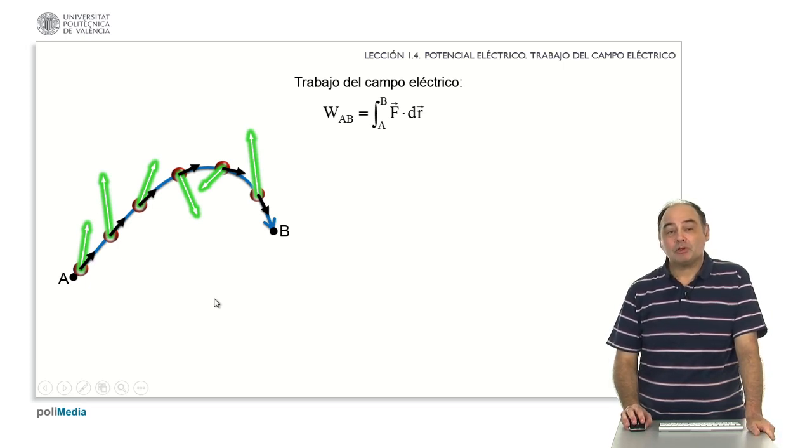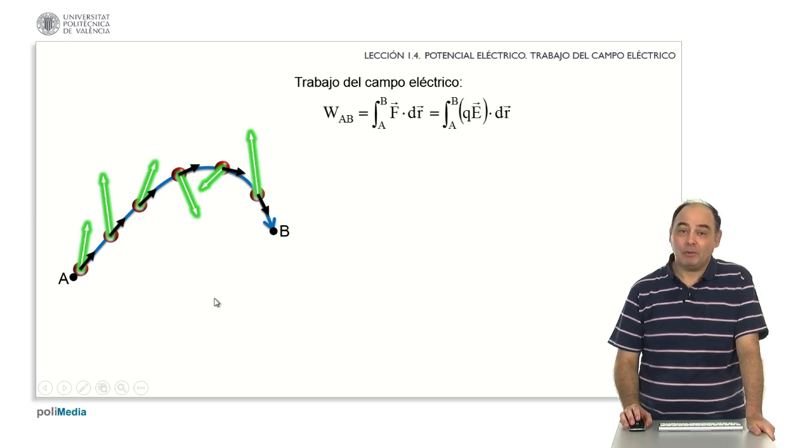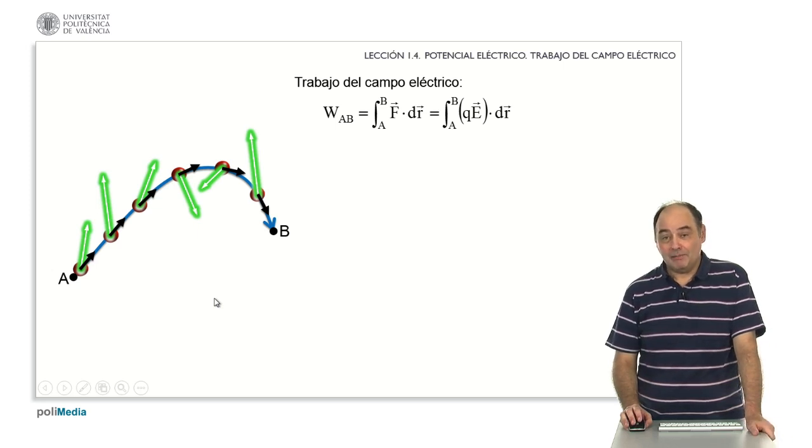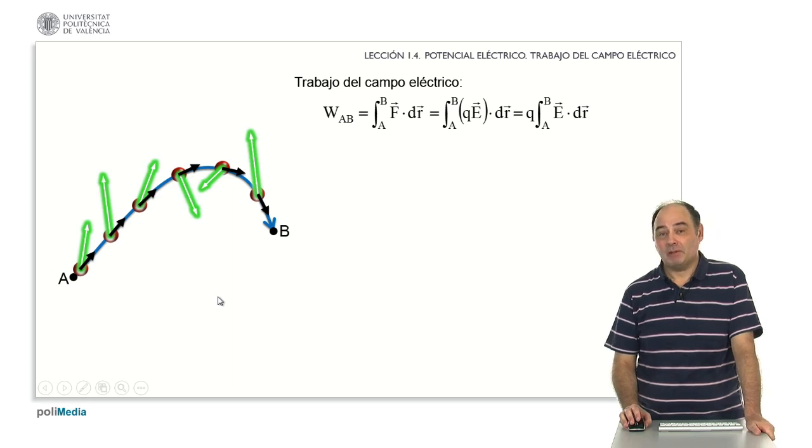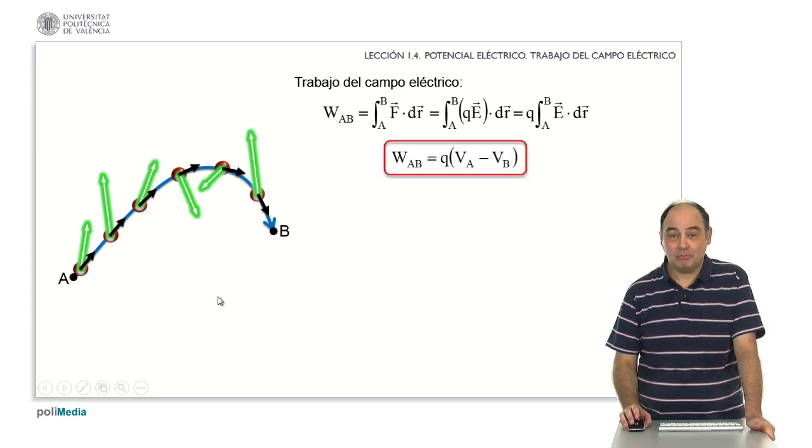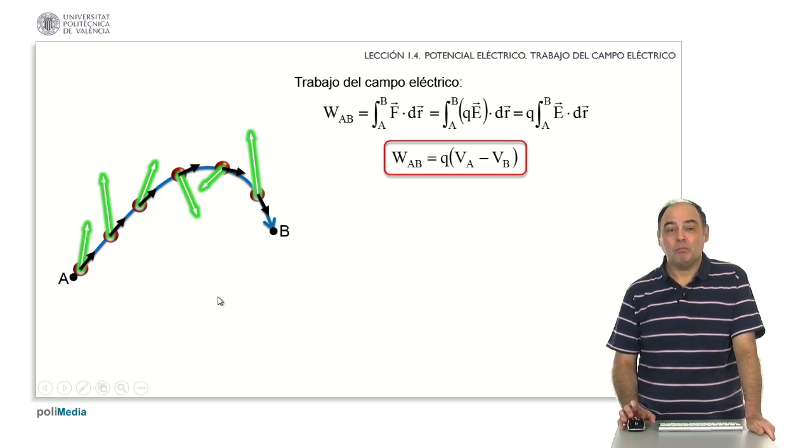As we know, the force acting on a charge moving between two points, for any point of them, is equal to the charge itself times the electric field. Since the charge is not going to change along the way, we can take it out of the integral. It is a constant value, and I am left with this expression. Therefore, I already have the integral of the electric field itself, which is nothing more nor less than the potential difference. The work in going from point A to point B of the electric force acting on a charge is the product of that charge by the potential difference.